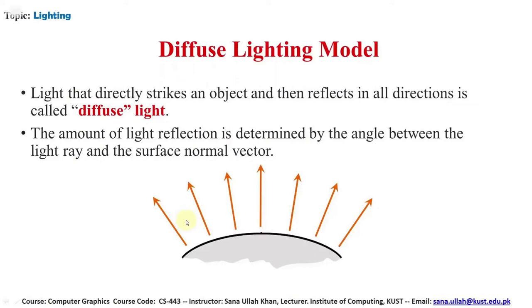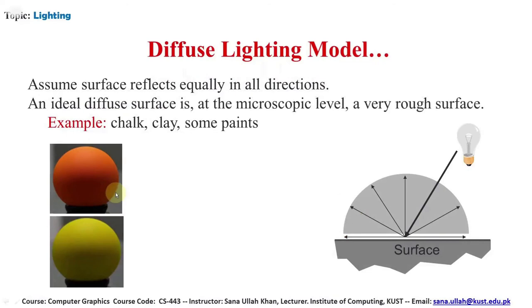The diffuse lighting model is another lighting model. In this model, direct light strikes an object and then reflects in all directions — this is called diffuse light. The amount of light reflection is determined by the angle between the light ray and the surface normal. Light first directly strikes an object, then reflects in all directions; the angle must be between 0 and 90 degrees. A diffuse surface reflects equally in all directions; at the microscopic level it is a very rough surface — for example, chalk or clay.